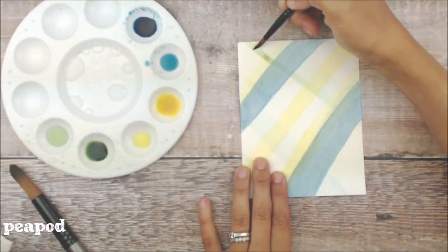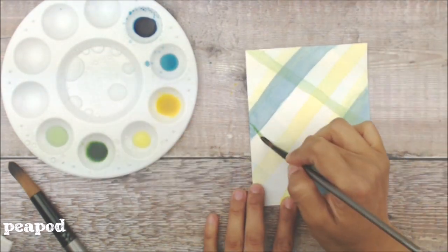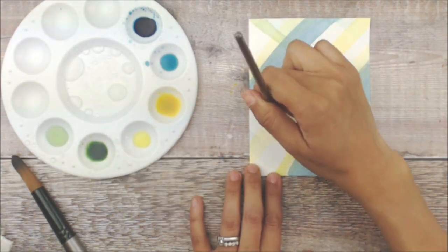With a smaller brush using peapod we are going to add some more stripes in the other direction.